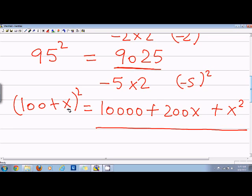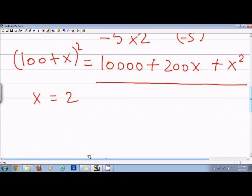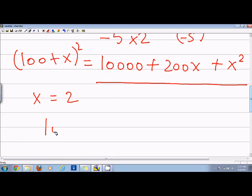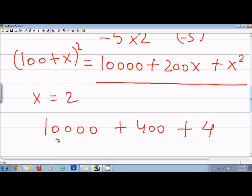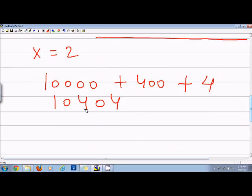So if x is equal to 2, then what I'll do is say 10000 plus 400 plus 4. That is equal to 10404. So if you look carefully, this is the same as trick. So 4 is equal to 2 into 2 and this 4 is equal to 2 square.